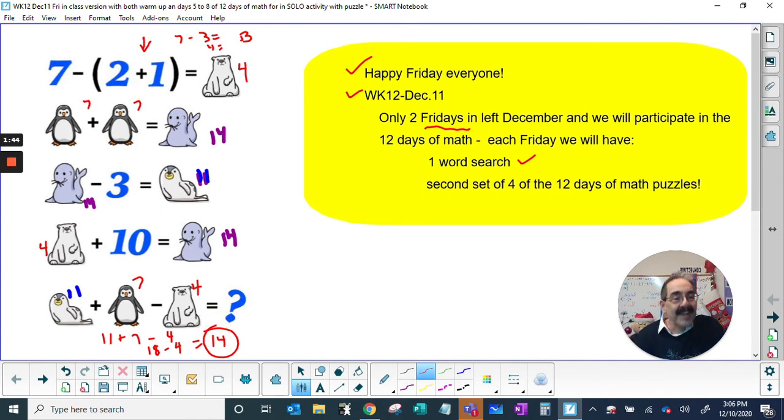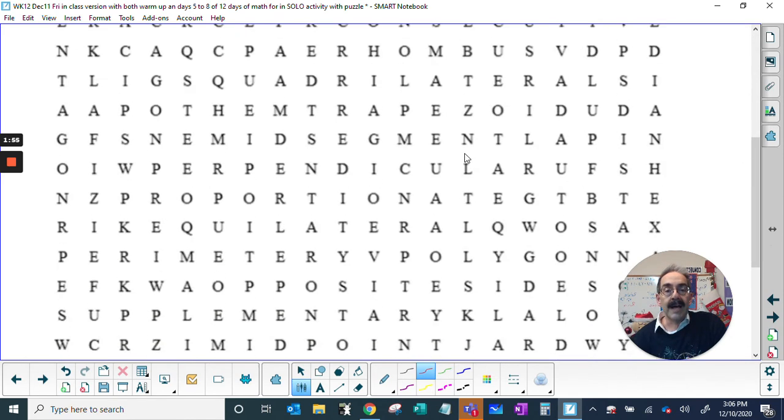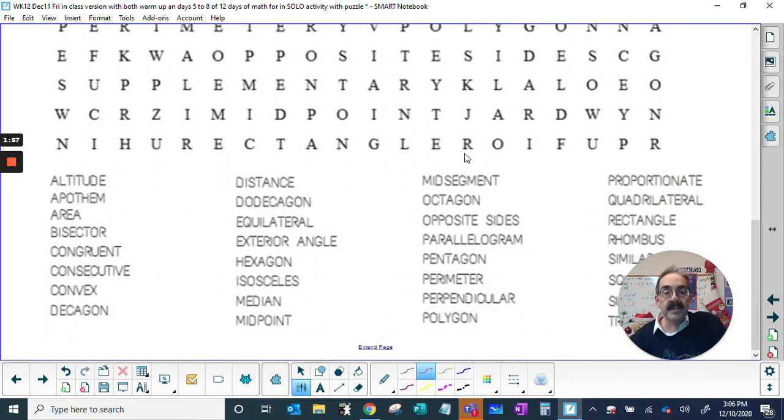All right. So hopefully that's helpful. In class today, we're going to do that one. And then, we're going to see if the class notebook collaboration space will allow us to do this word search. Okay? So real quick. There's rectangle. Okay? Rectangle. So there's rectangle. Boom. There's one of the words.